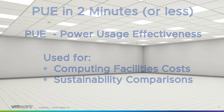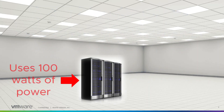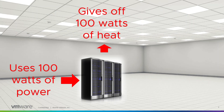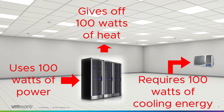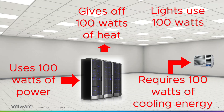Let's look at an example. We have a host sitting in a data center and it uses 100 watts of power. This group of hosts also gives off 100 watts of heat. To dissipate that heat, we need air conditioning, and it's going to require 100 watts of cooling energy. We also have some lighting and some other things.